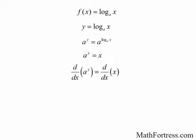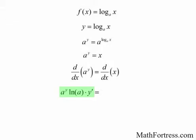We first take the derivative of both sides. The derivative of the left side requires the use of the derivative rule from our previous video — specifically, the derivative of an exponential function. Applying that along with the chain rule, the left-hand side reduces to a raised to the power of y times the natural log of a times y prime. The derivative of x is equal to 1.